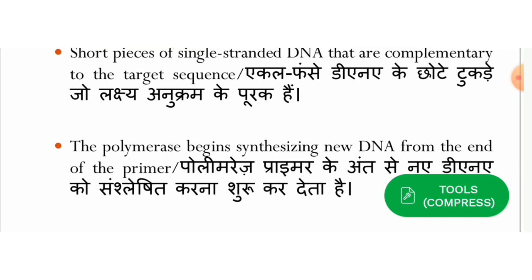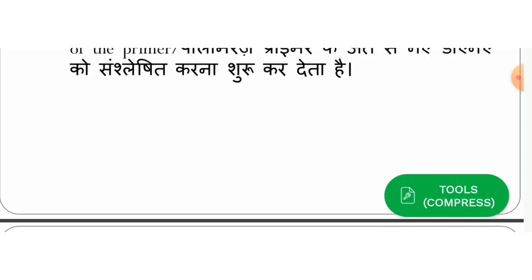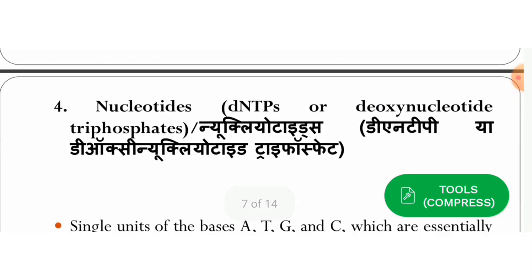What will the polymerase enzyme and primer do? The primer is complementary, so it will anneal to the complementary target sequence, and then the polymerase enzyme will begin synthesizing a new DNA strand. The fourth most important component is the nucleotide — since this is DNA, we call it deoxynucleotide triphosphate (dNTP).